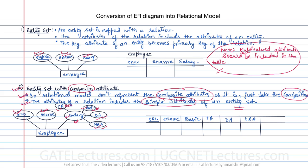So the Employee table will have employee number, employee name, Basic, TA, DA, and HRA as its attributes. Employee number remains the primary key. Only simple attributes are included in the relation.